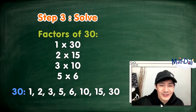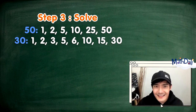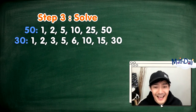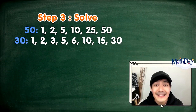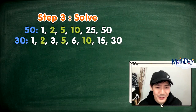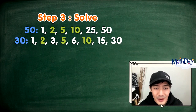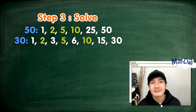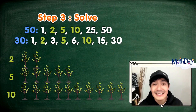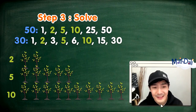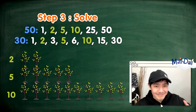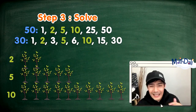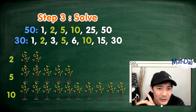Now that we have the factors for 50 and 30, nalista na natin. Makikita natin ang common factors nila ay 2, 5, and 10. Ibig sabihin, to make sure na may common number of trees per row, pwede tayong magtanim ng 2, 5, or 10 seedlings per row. Naintindihan na natin yung problema, nakagawa na tayo ng plano, at nabigyan na natin ng solution.